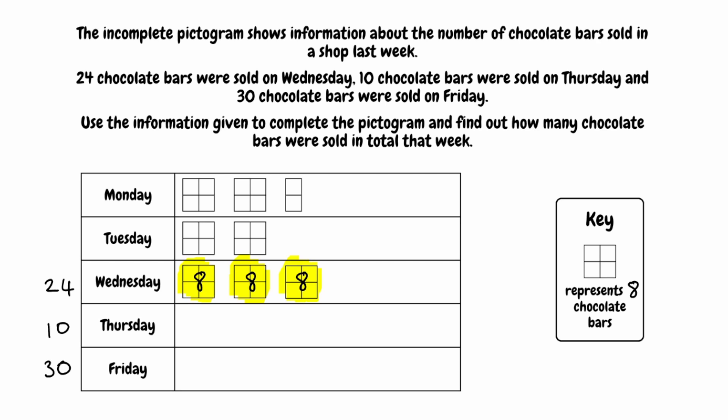For Thursday, ten chocolate bars were sold. A big square represents 8 chocolate bars, so we're going to have one big square. Looking back at the key, the big square is made up of four little squares, and if we do 8 divided by 4, that gives us 2 — so each little square represents 2 chocolate bars. We've done one big square which equals 8, and now we only need 2 more, which is just one little square — a quarter of the big square. So that's our pictogram for Thursday.